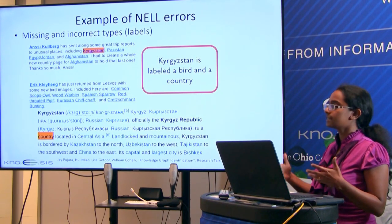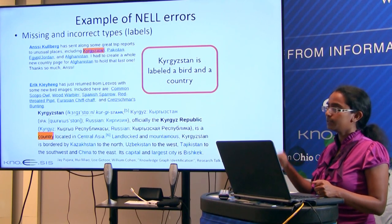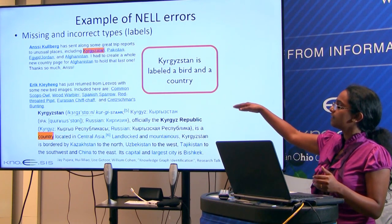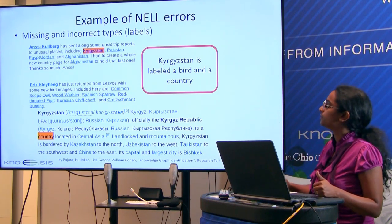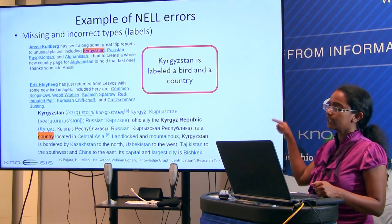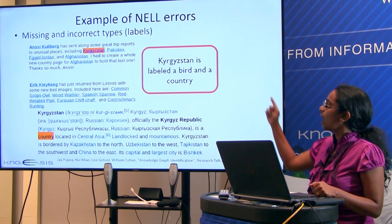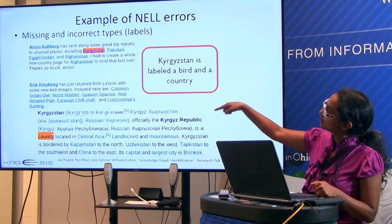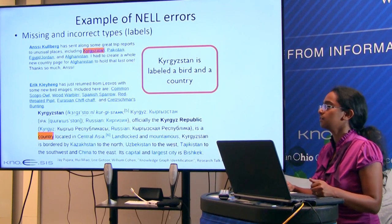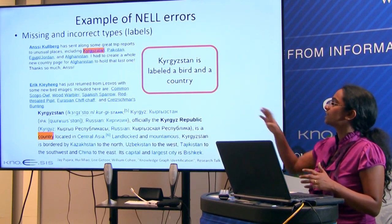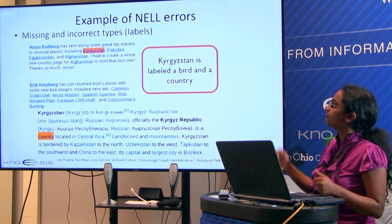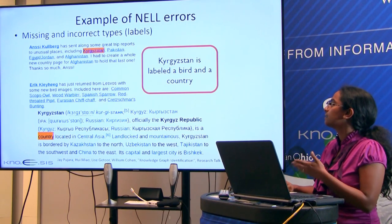There are also problems in assigning types. In a real NELL example, Kyrgyzstan is labeled both as a bird and as a country. Country we can understand, but the bird label came from a webpage where Kyrgyzstan appeared in context of bird photography. So they incorrectly assigned Kyrgyzstan the type 'bird'.